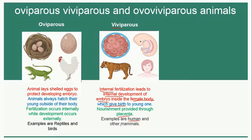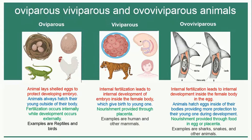Examples of viviparous animals include humans and other mammals such as tigers and elephants. Then comes ovo-viviparous — in ovo-viviparous animals, internal fertilization also leads to internal development, similar to viviparous animals.